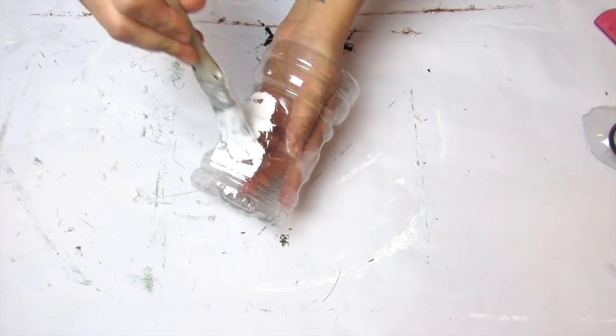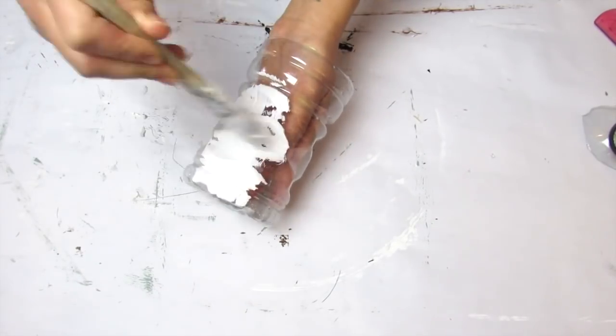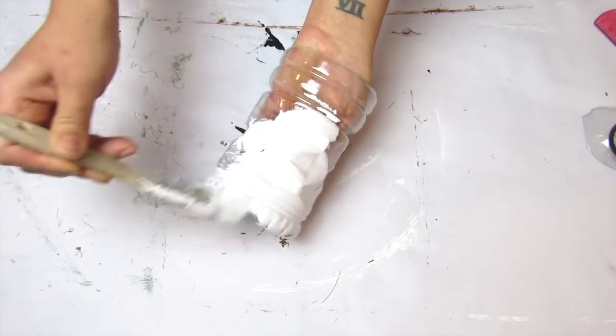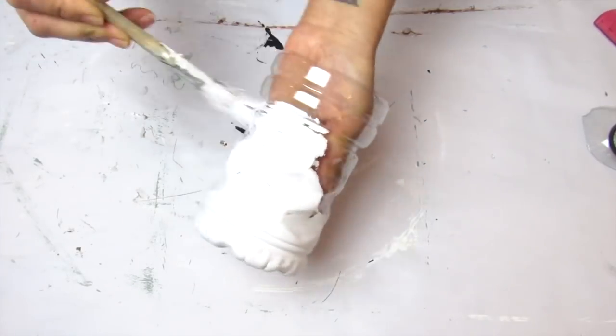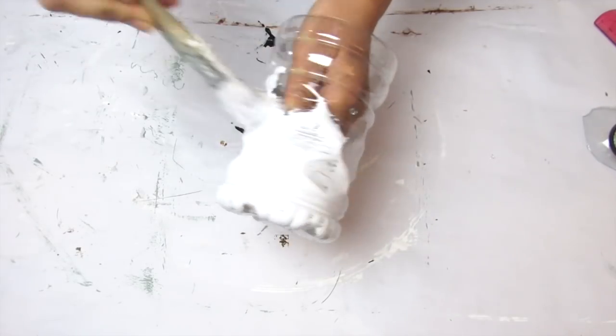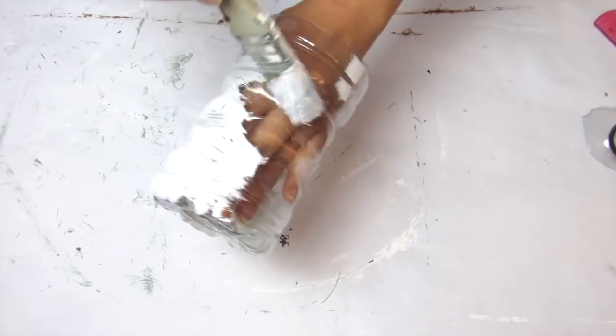I am taking Folk Art chalk paint in Adirondack White and giving that one coat. We will be distressing this, so one coat of the chalk paint just enough that the plastic is covered is fine.